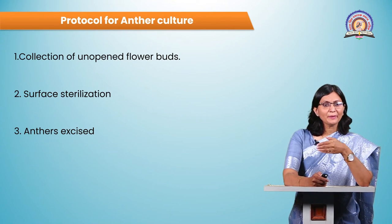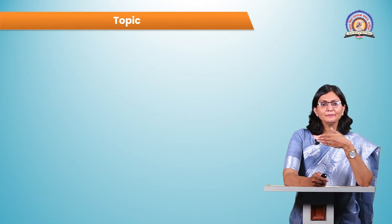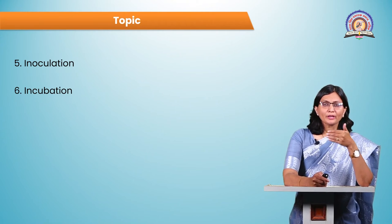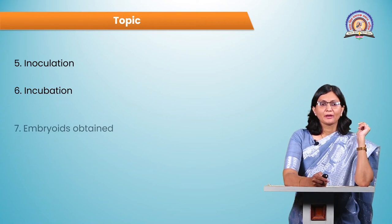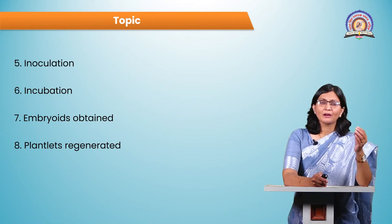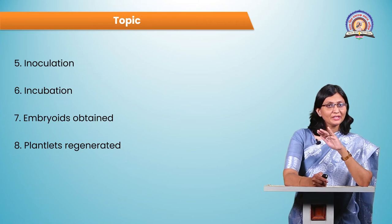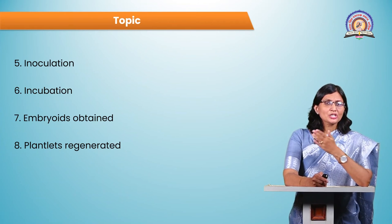The explant is now ready for the next step. It is placed on a sterile Petri plate and anthers are excised. Selected anthers are inoculated on MS medium supplemented with phytohormones, then incubated at 25°C in dark conditions with 60% relative humidity. After incubation, either embryoids or callus will be obtained depending on whether direct or indirect androgenesis occurs.